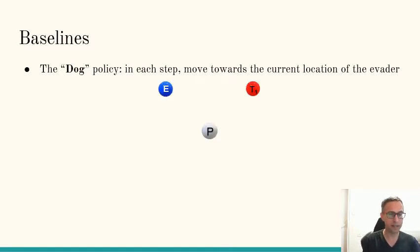Let's see this example. The evader will go straight to the target and the pursuer would apply the dog policy. As you can see in this case, the evader reached the target. So the dog policy was not optimal in this case.